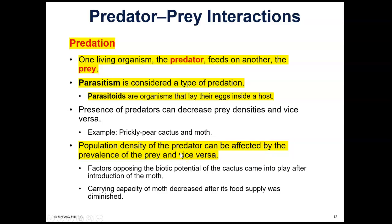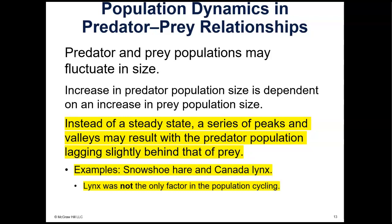The population density of the predator can be affected by the prevalence of the prey and vice versa. What you typically see with predator-prey relationships is population numbers that fluctuate in relation to each other — they help keep the other population in check. We don't see a steady state; instead we see a series of peaks and valleys.